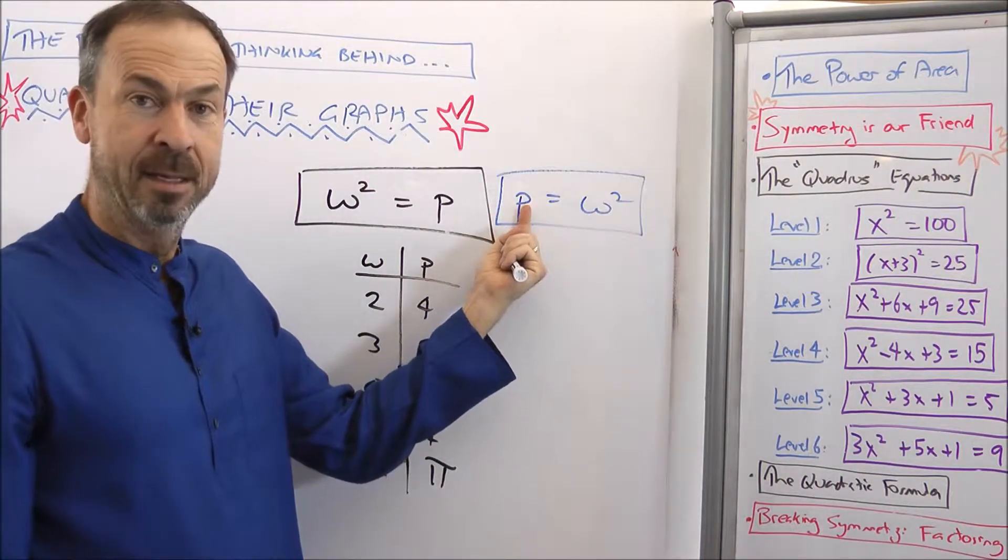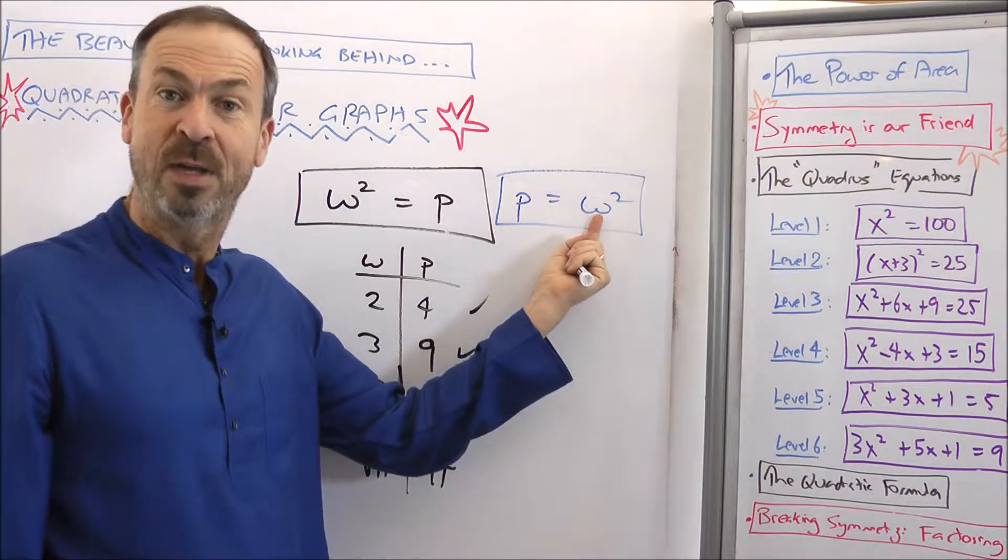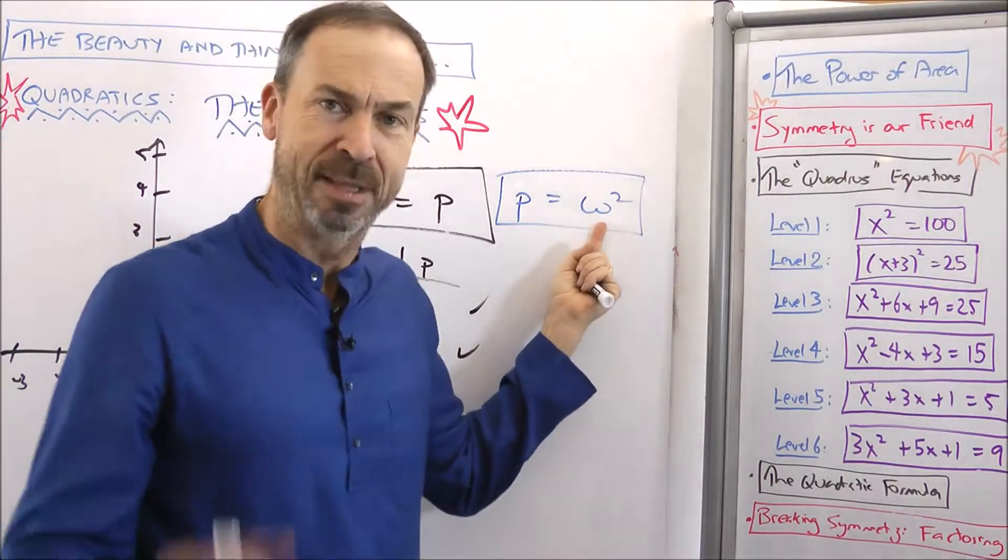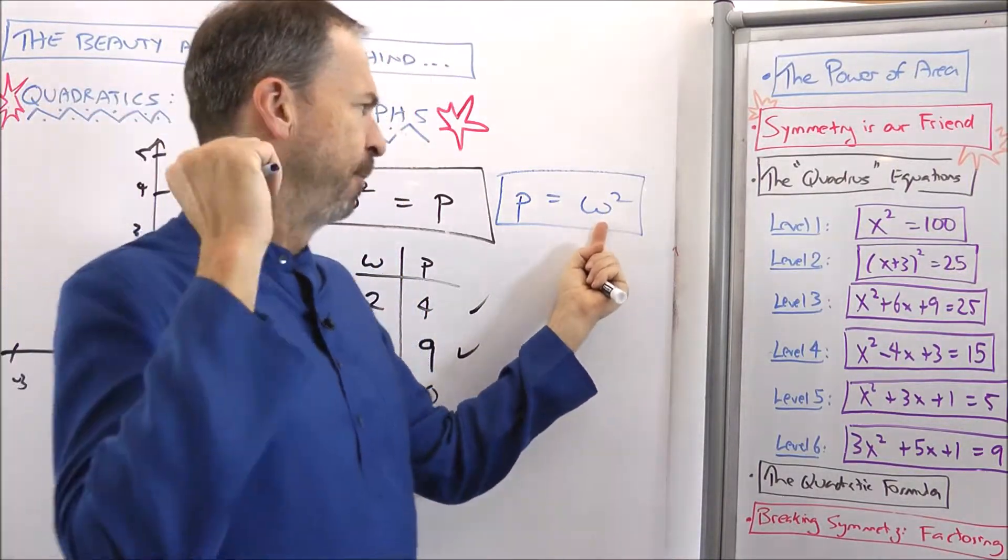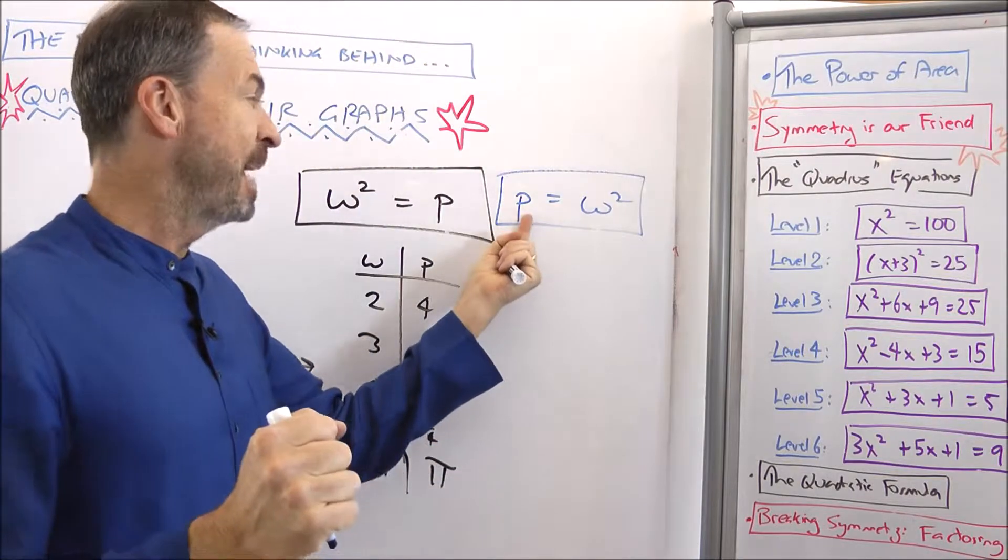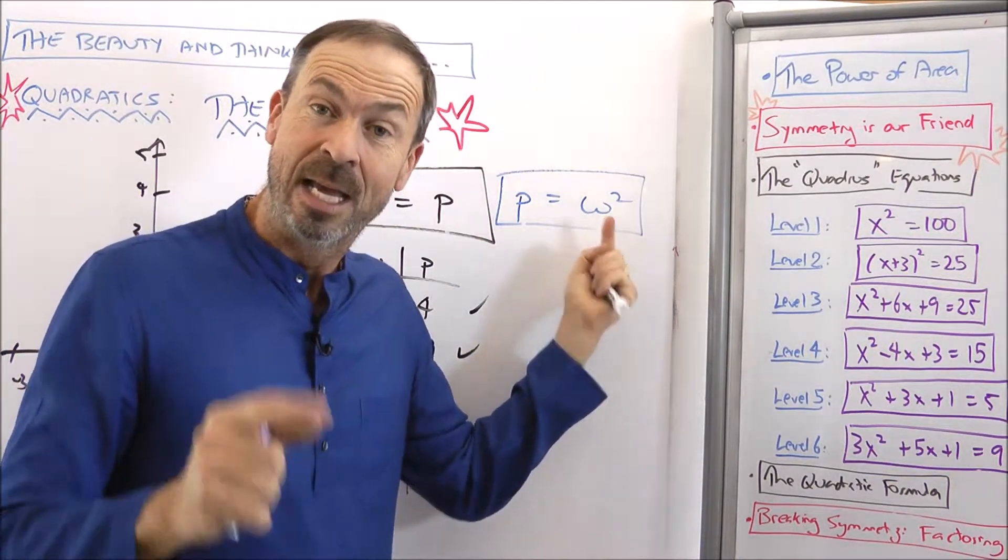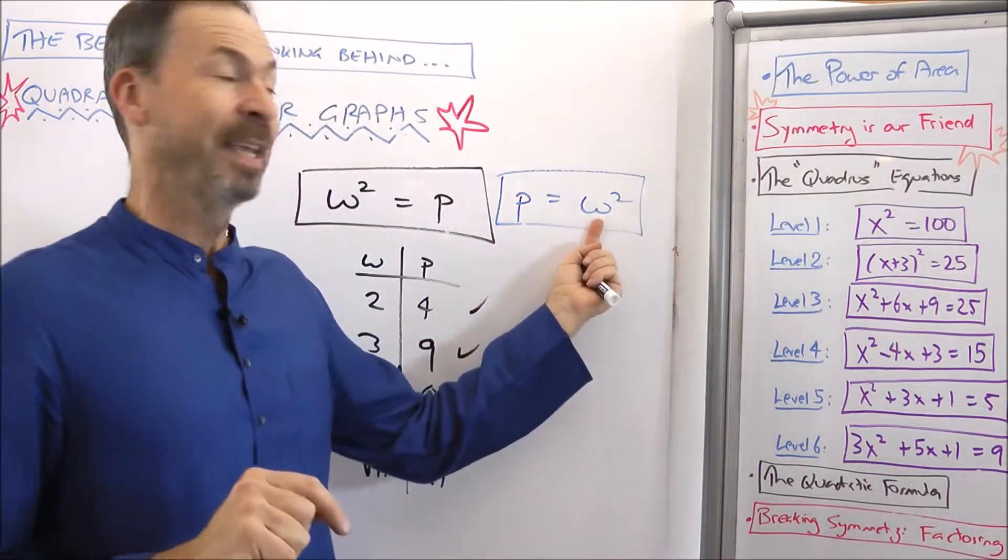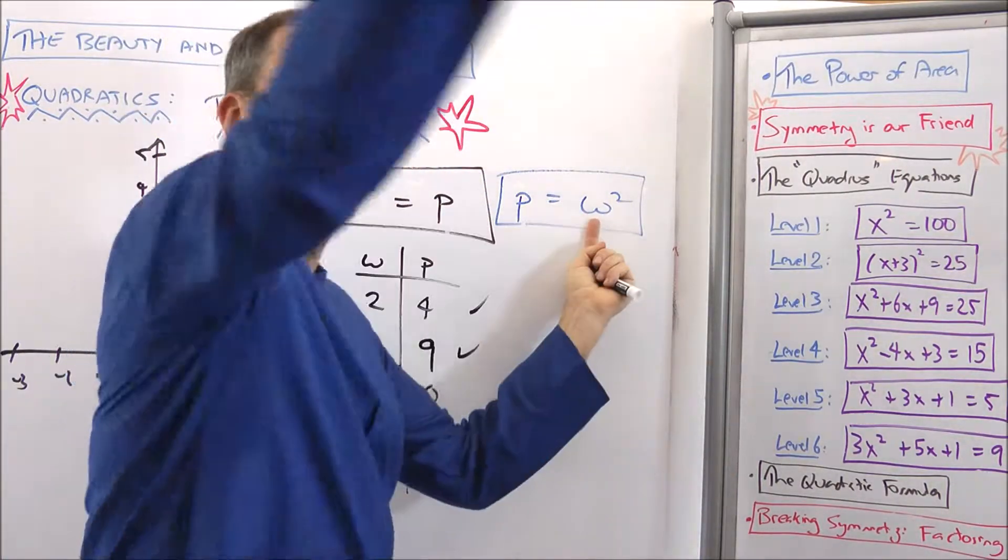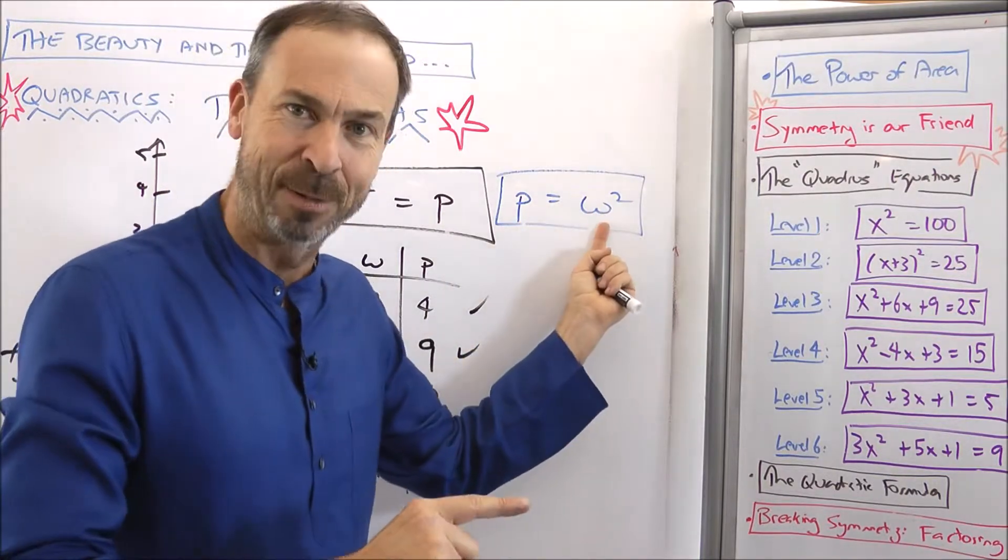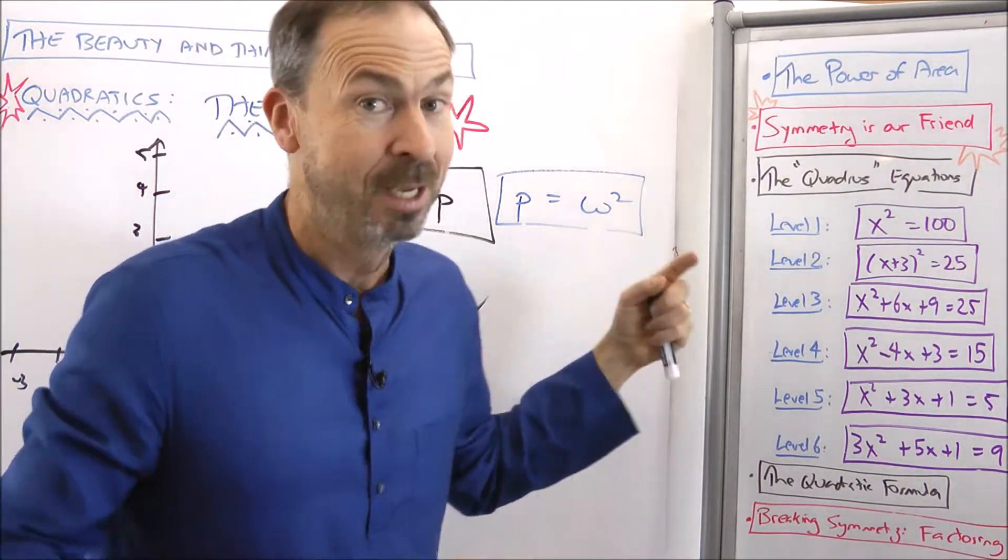They might like to think the value of P is somehow dependent on doing something strange to a value W. They might say W is like the key variable here, like the primary variable, and then P has to follow along by being whatever that value you choose there being squared. In which case, they might call W the independent variable. It can take a whole range of different values. And P's value depends on what the value of W is, the dependent variable.